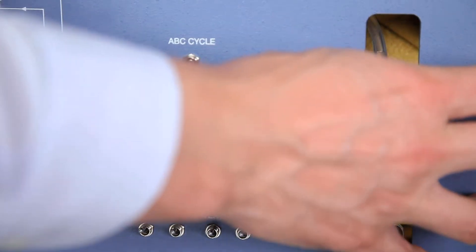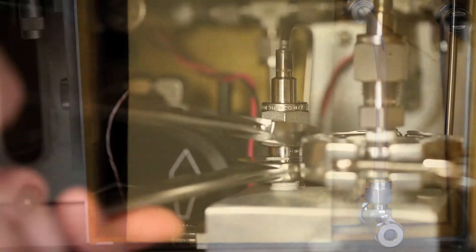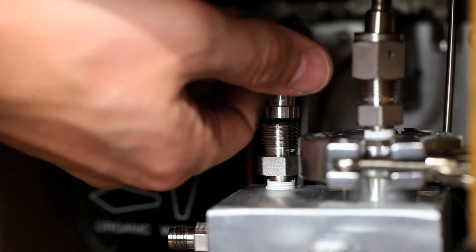Begin by opening the access door and removing the insulation. Now we fill the saturator, disconnect the VCO connectors, and remove the saturator.